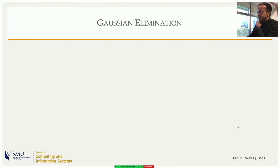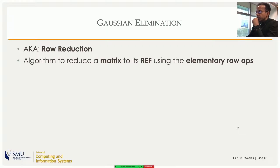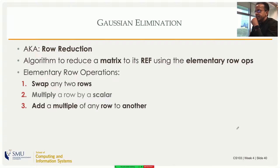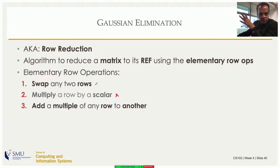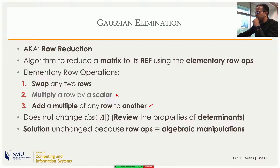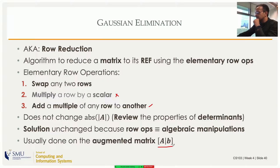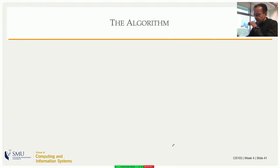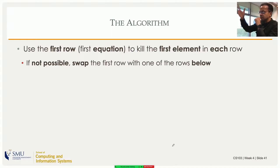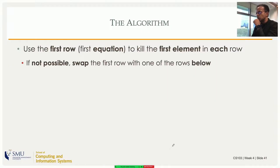Gaussian elimination, also known as row reduction, is an algorithm to reduce a coefficient matrix to its row echelon form using the three elementary row operations — though we won't use the scaling operation. The algorithm starts by using the first row to kill the first element in each row below it. This is possible if the first element of the first row is non-zero — scale that row and subtract from each row below to zero out their first elements.